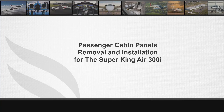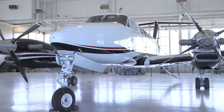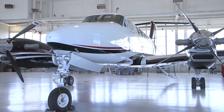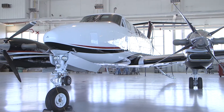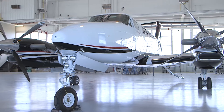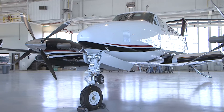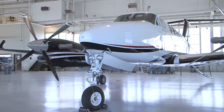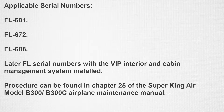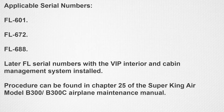This video will demonstrate how to remove and install the cabin window panel, cabin lower sidewall panel, and passenger table close-up panel in the passenger compartment on the Super King Air 350i. These instructions are applicable to serial numbers FL601, FL672, FL688, and later FL serial numbers with the VIP interior and cabin management system installed. These procedures can be found in chapter 25 of the Super King Air model B300C Airplane Maintenance Manual.